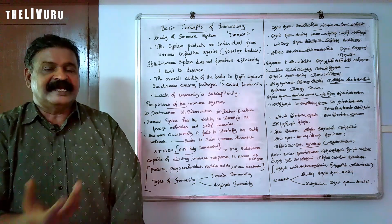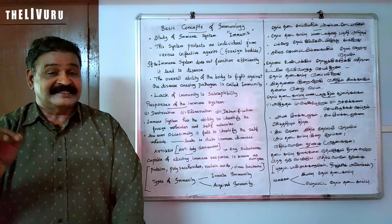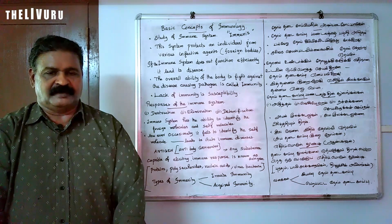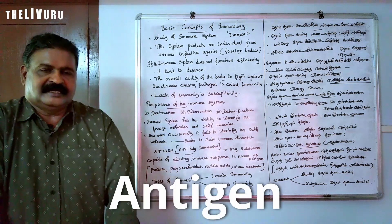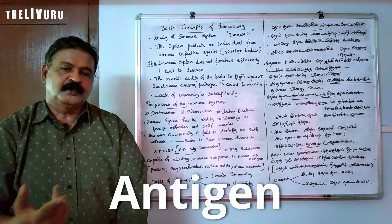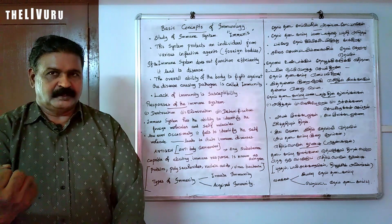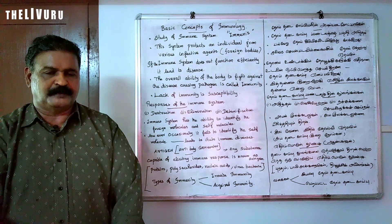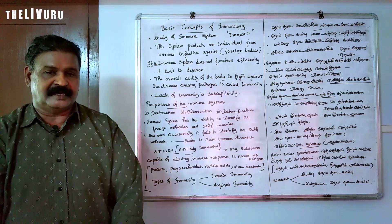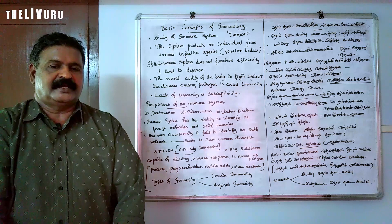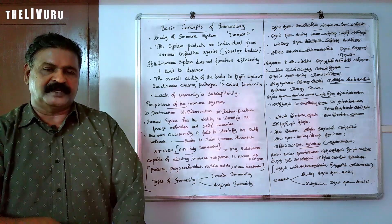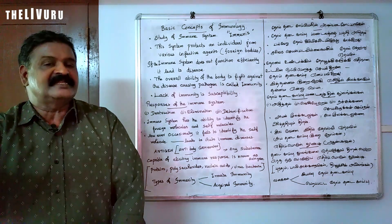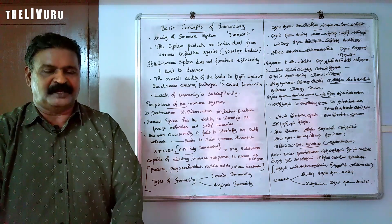The immune system is able to identify self and non-self antigens, as well as self and foreign antigens. Antigens include pathogens such as viruses, bacteria, carbohydrates, and nucleic acids.